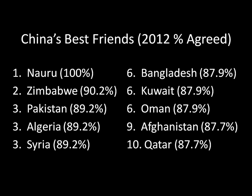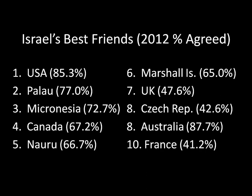We can also do this for Israel. These are the percentage of votes in 2012 that various countries agreed on with Israel, and we see that the United States is closest to Israel here — you could actually see that going back a couple of slides on the plot of the 2012 ideological spectrum. And we see a bunch of other countries in the West mostly coming out and voting along with Israel.